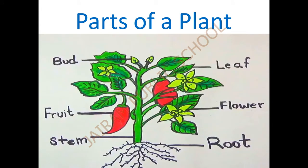We are going to see the parts of the plant. P-A-R-T-S, parts O-F a P-L-A-N-T, plant. How we have parts in our body, likewise the plants also have many parts. Like head, hands, ears, nose - we have many body parts. So likewise we have many parts in the plant also. Let us see one by one.